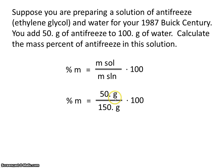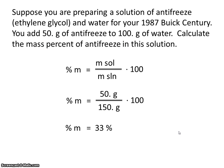There's 50 grams of antifreeze and a total of 150 grams of solution — 50 plus 100. So the mass percent of ethylene glycol in your solution is 33%.